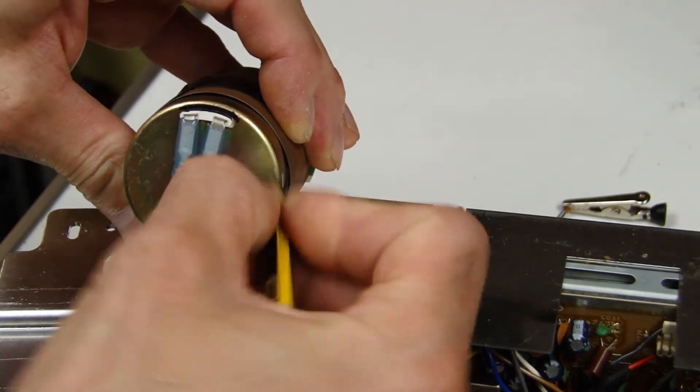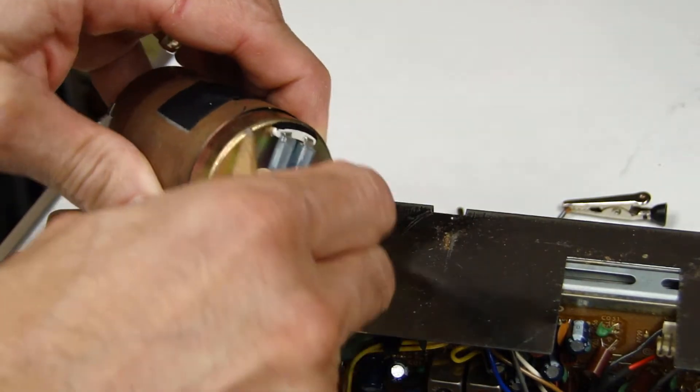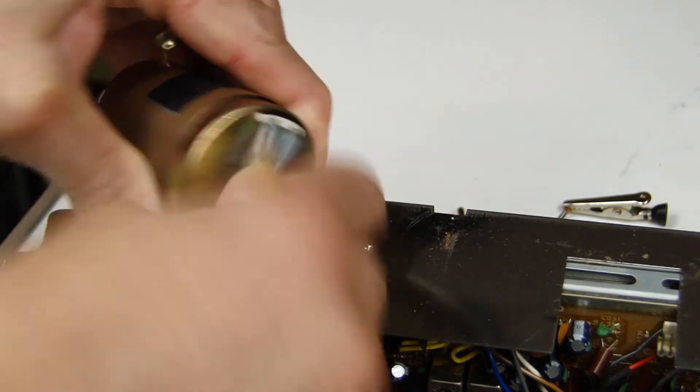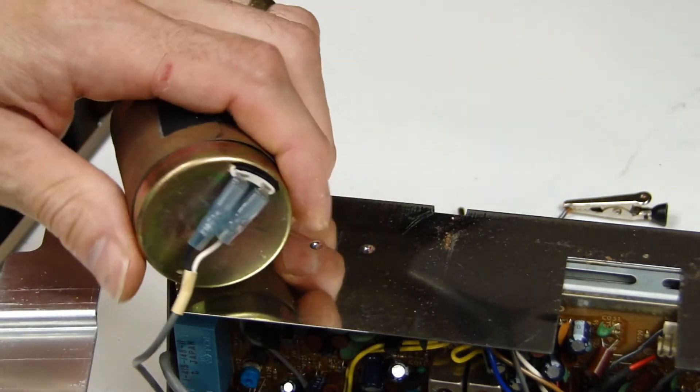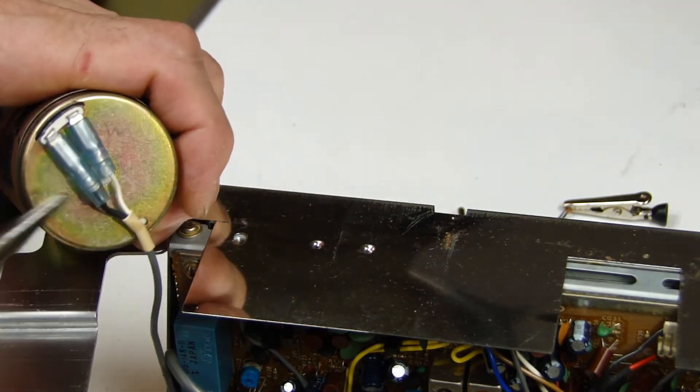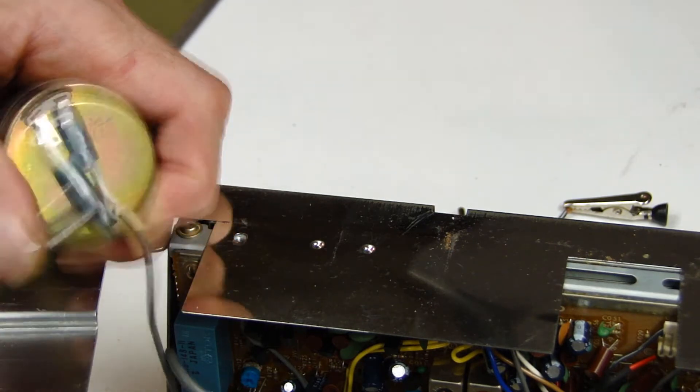Mark the motor so you know which way the wires go back on. Then carefully remove them. You may need to use a pair of long nose pliers to do this, and be careful not to crush the cables.